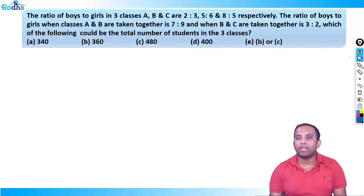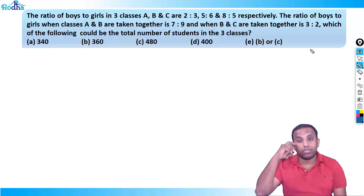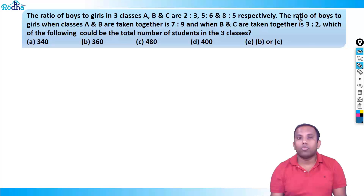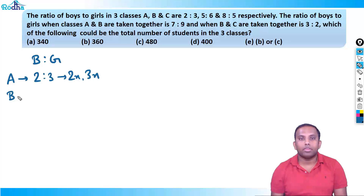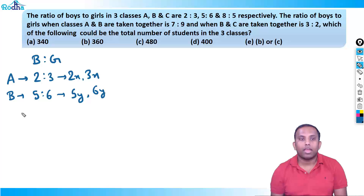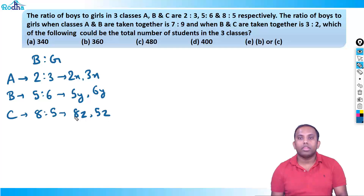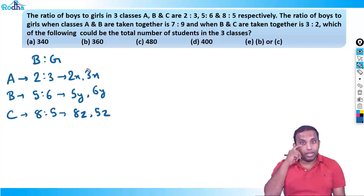The ratio of boys to girls in three classes A, B, and C are 2:3, 5:6, and 8:5 respectively. The ratio of boys to girls when classes A and B are taken together is 7:9, and when B and C are taken together it is 3:2. In class A, boys to girls is 2:3, so assume 2x and 3x. In class B it is 5:6, so assume 5y and 6y. In class C it is 8:5, so assume 8z and 5z.